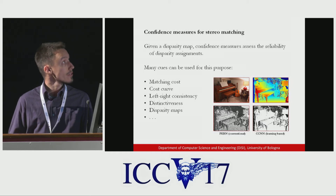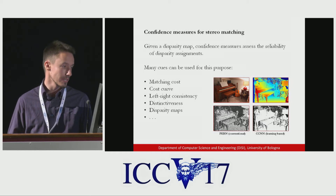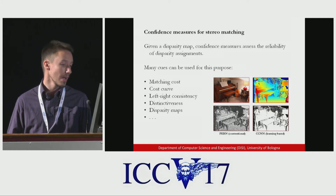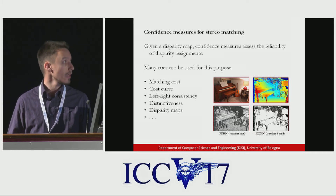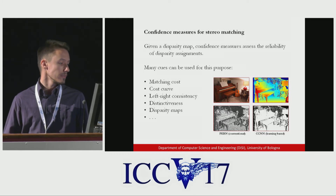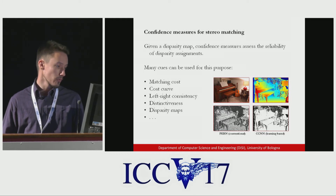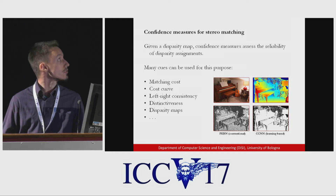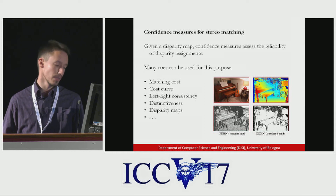Confidence measures assess the uncertainty of the disparity assignments given by a stereo algorithm. Here you can see a reference image, an example of a noisy disparity map, and two confidence maps on which bright colors encode the more reliable assignments. The confidence information can be obtained by processing several cues, such as the matching cost, the cost curve, left-right consistency, and others.